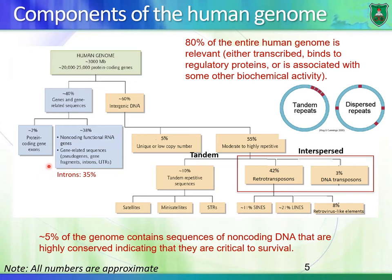Gene-related sequences include pseudogenes — things that look like genes but are not true genes and do not get transcribed — as well as gene fragments, introns, and untranslated regions. About 30% of the human genome is basically made of introns.